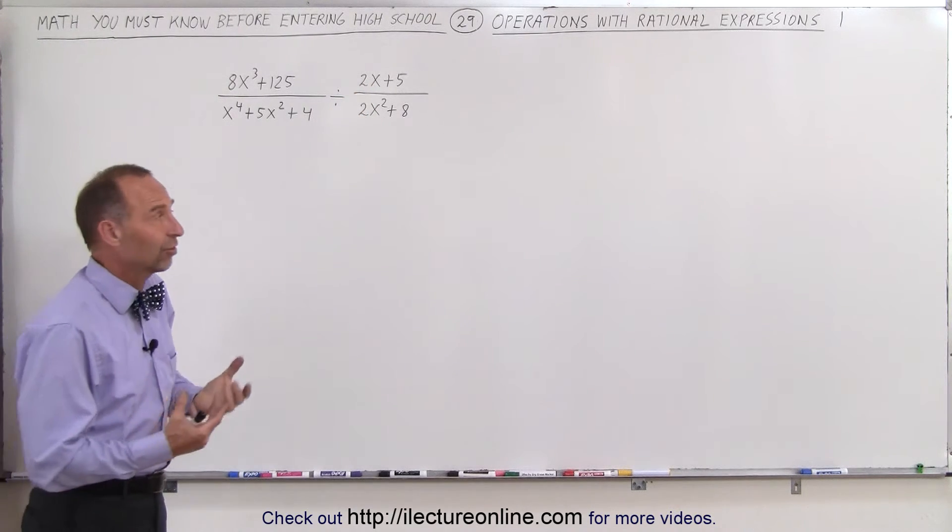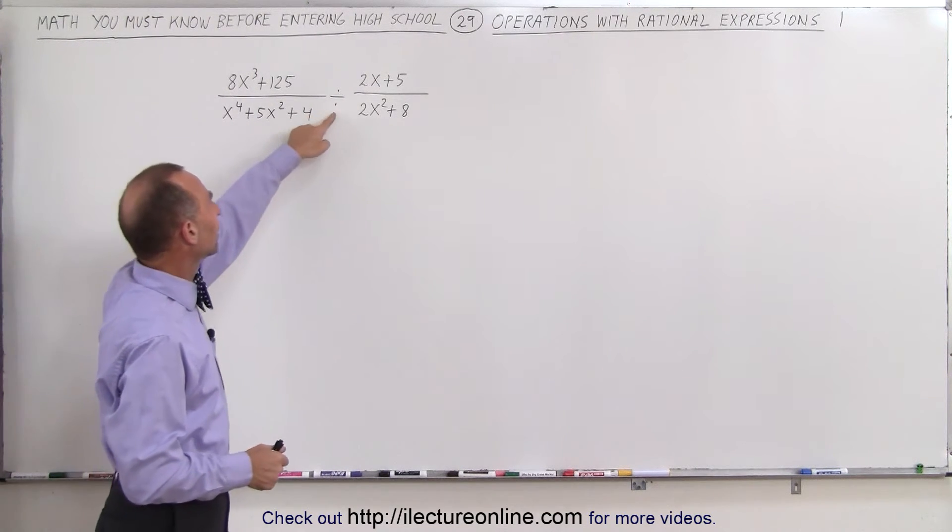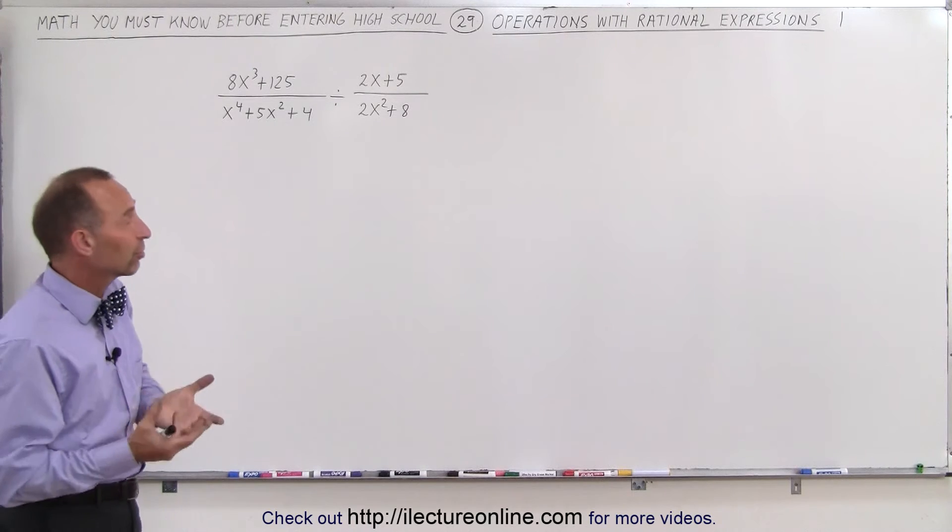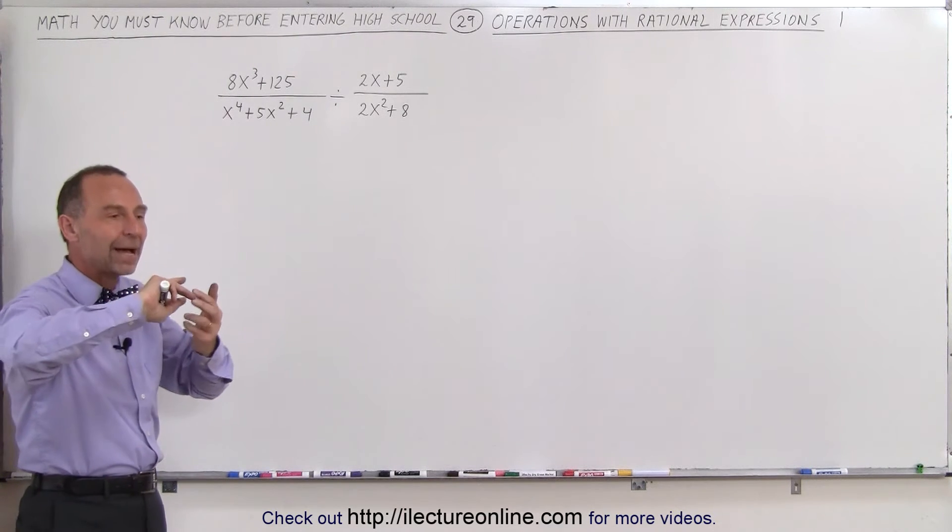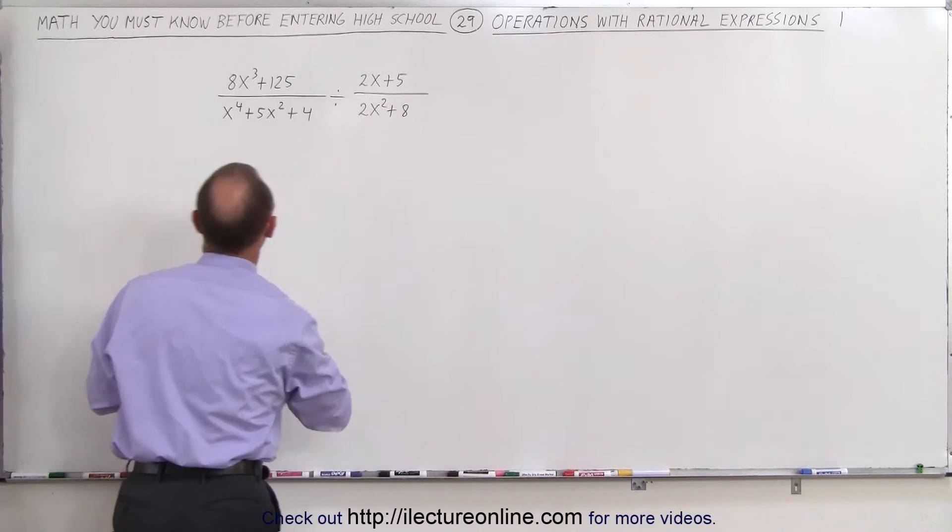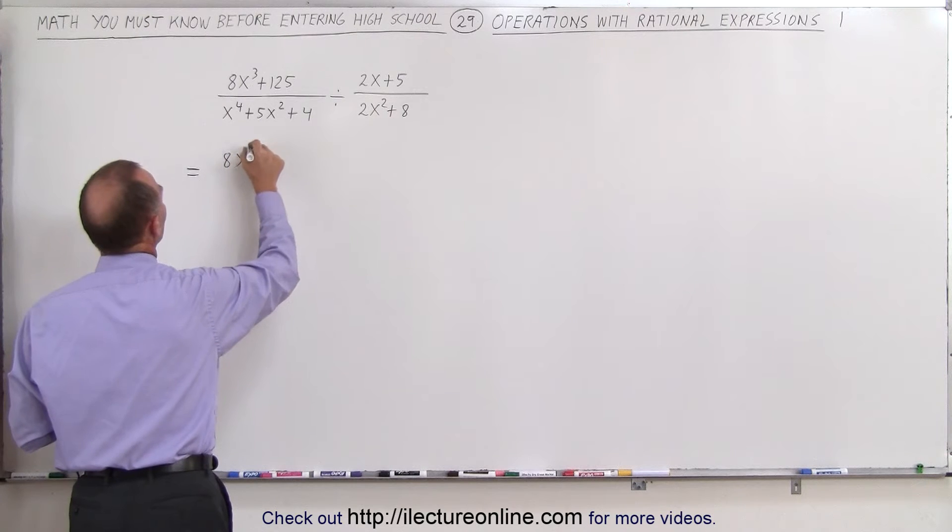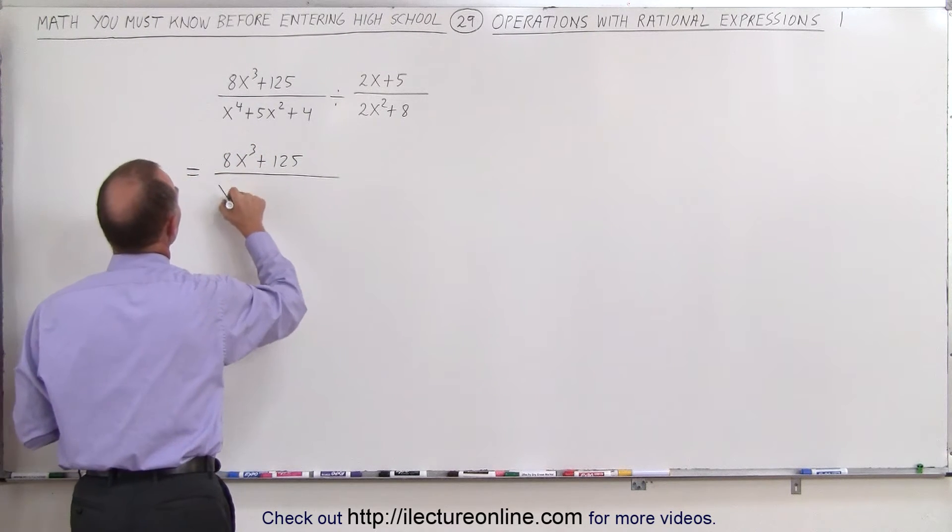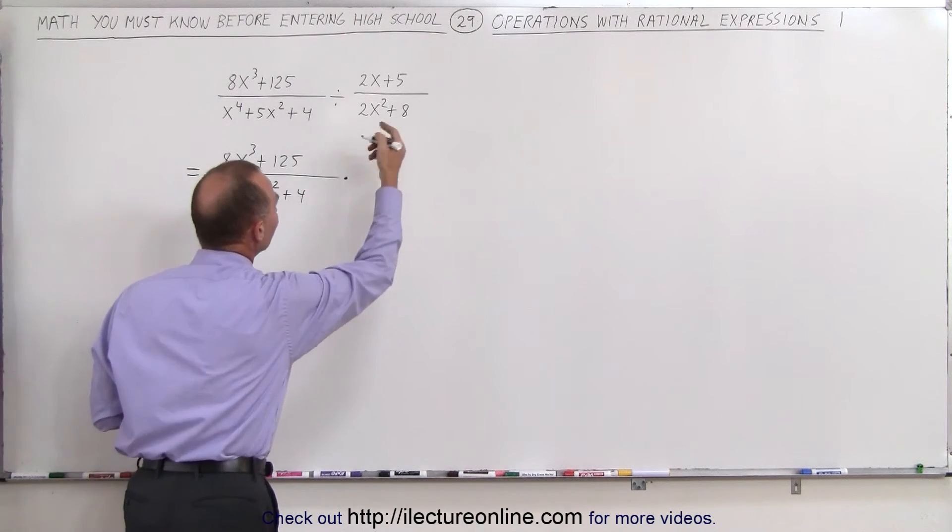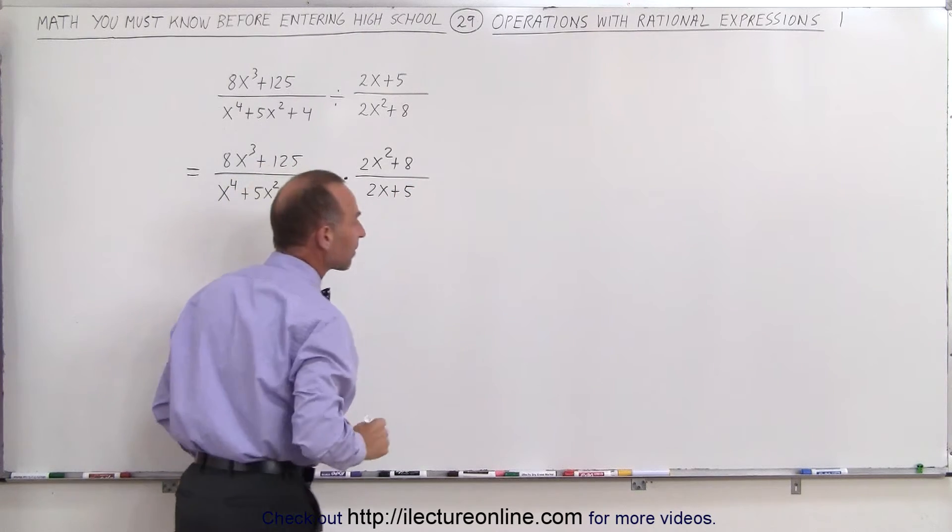Here we have this divided by this. The first thing you should always do when we have a rational expression divided by another rational expression is turn that into multiplication by inverting that second rational expression. So instead of dividing by this, we're going to multiply by its inverse. So change the division into multiplication. This is now 8x cubed plus 125 divided by x to the fourth plus 5x squared plus 4, multiplied by the inverse of this, which is now 2x squared plus 8 divided by 2x plus 5.